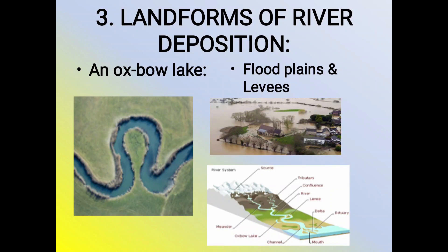During a flood, the river is unable to accommodate the large volume of water through the meandering course, and it follows a straight shortcut course by completely avoiding the meander. Even after the flood recedes, the river follows the new straight course, and thus the meander is completely cut off from the main river course.